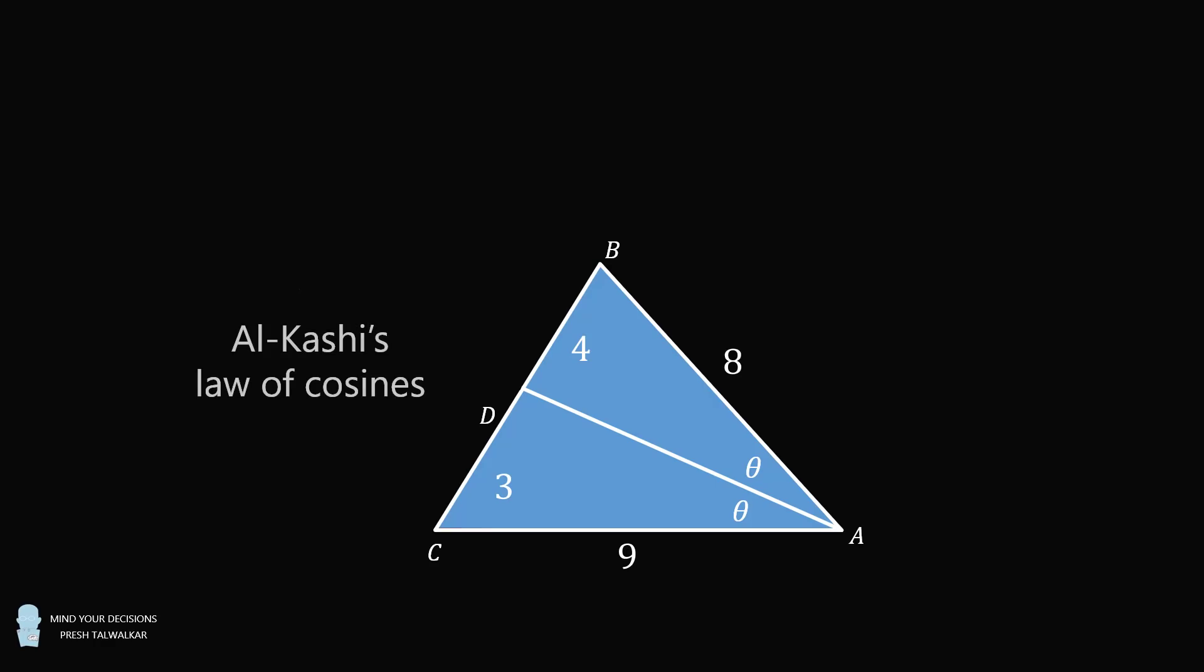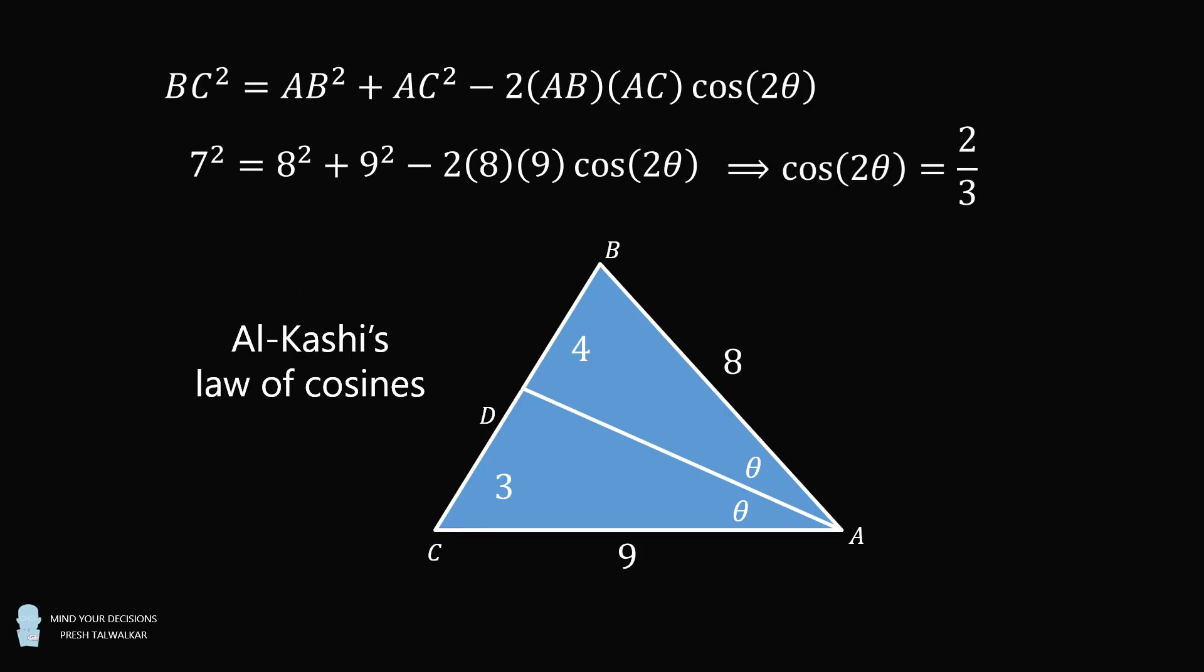To do that, we will use Al-Kashi's law of cosines. We have BC squared is equal to AB squared plus AC squared minus 2 multiplied by AB multiplied by AC times the cosine of 2 theta. We substitute in the values and then solve for the cosine of 2 theta. This will be equal to 2 over 3.